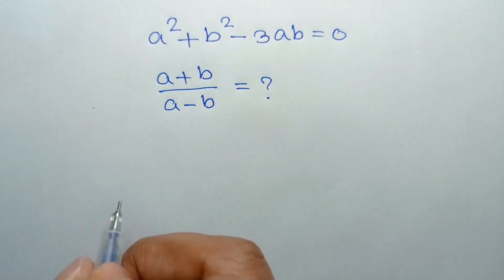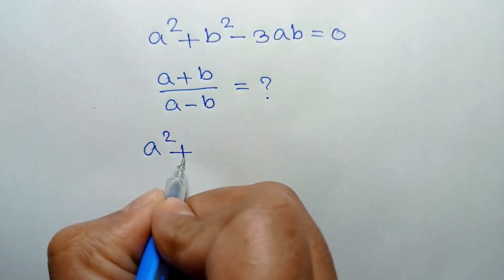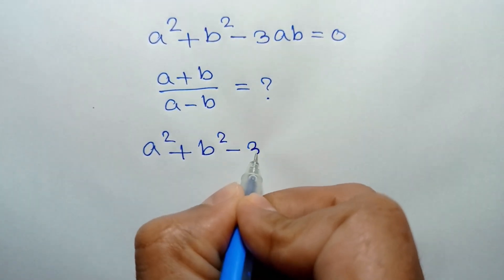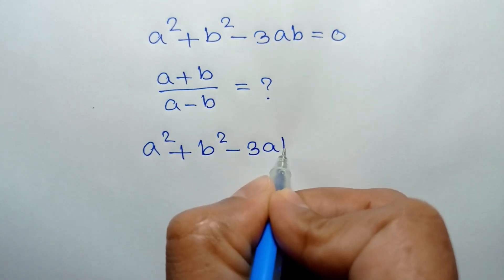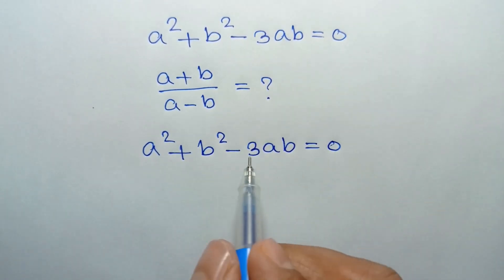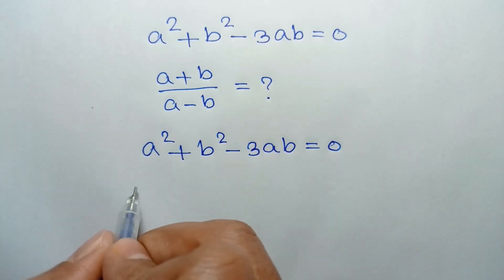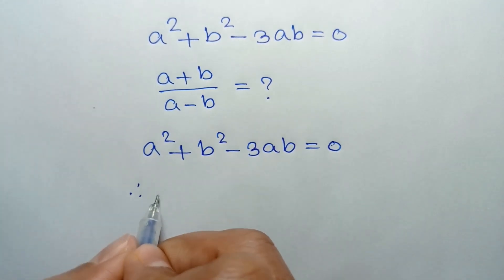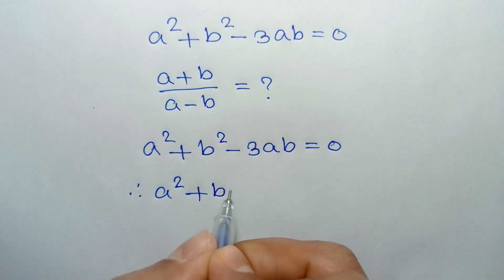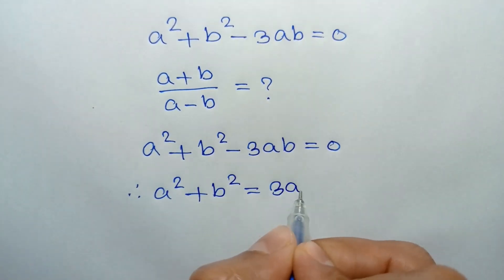We have given a²+b²-3ab = 0. Taking 3ab to the right side, we can write a²+b² = 3ab.